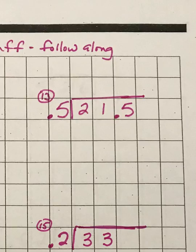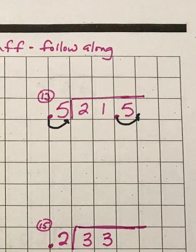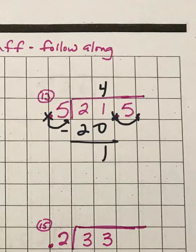Same thing on this one — move the decimal point from 0.5 over one space, so it becomes 5 on the outside. Whatever you do on the outside, you have to do the same thing on the inside, so move that decimal place over one space on the inside too. Then divide like normal: 5 goes into 21 four times, which is 20. Subtract, bring the 5 down — 5 goes into 15 three times. Now we have the decimal point there; decimal point goes straight up from where we changed it.